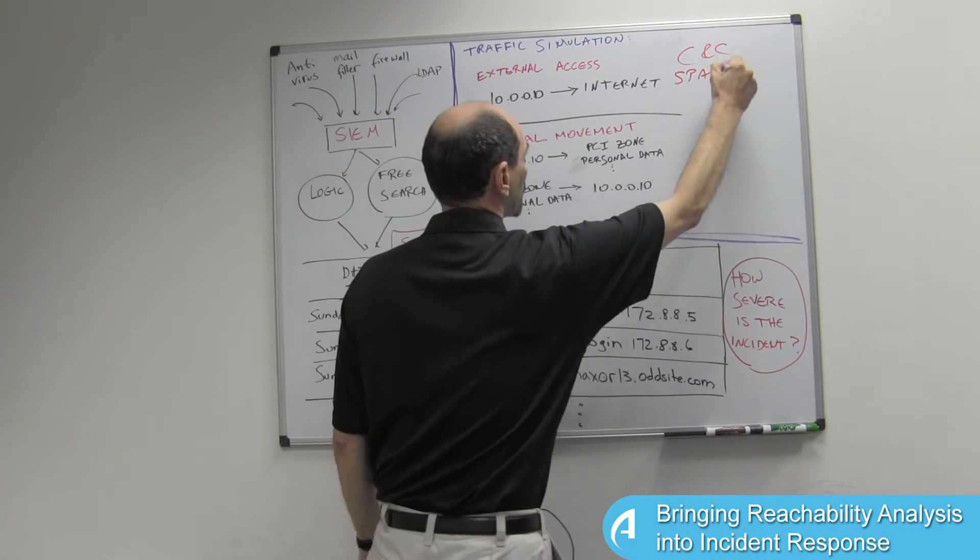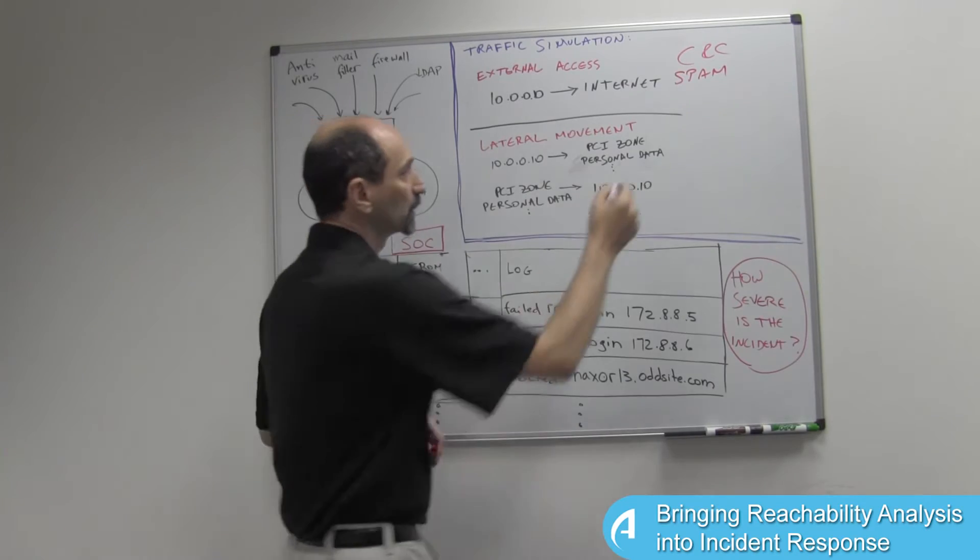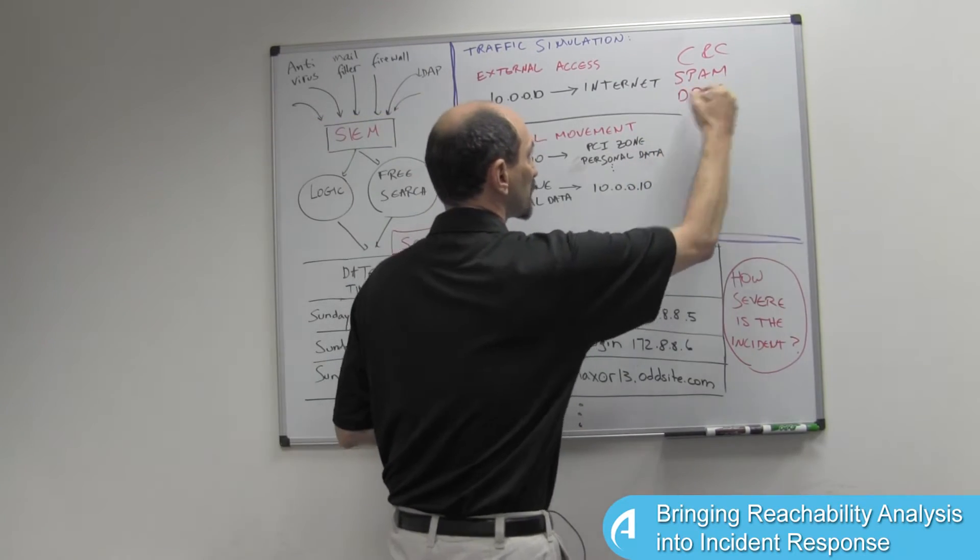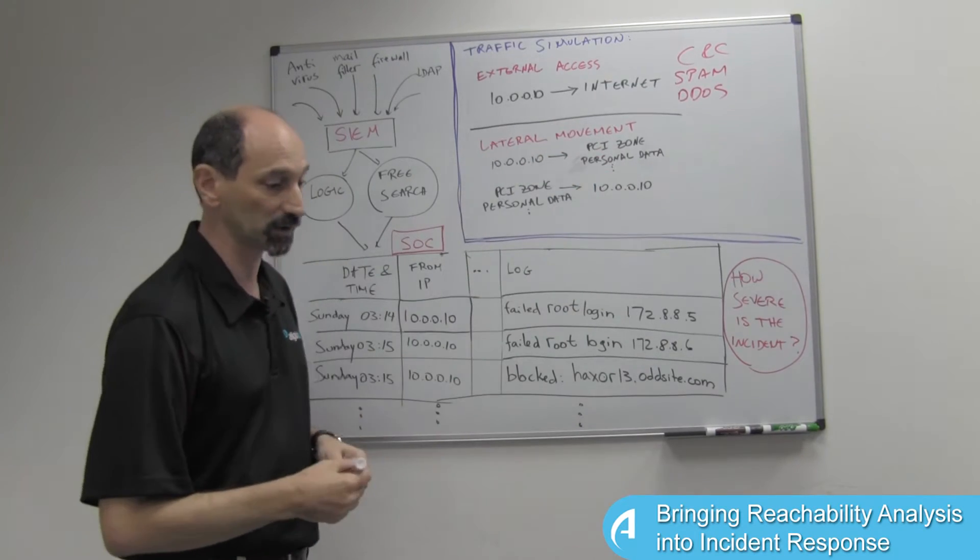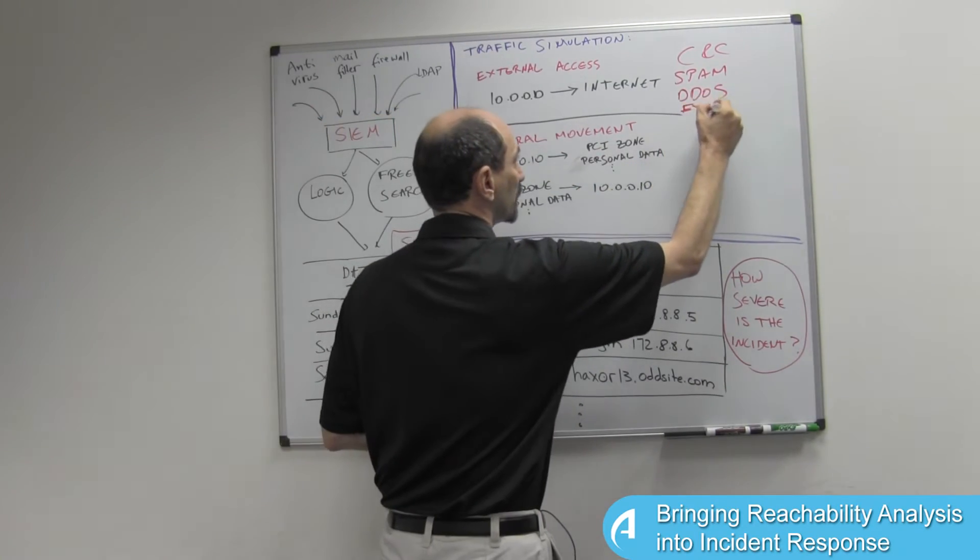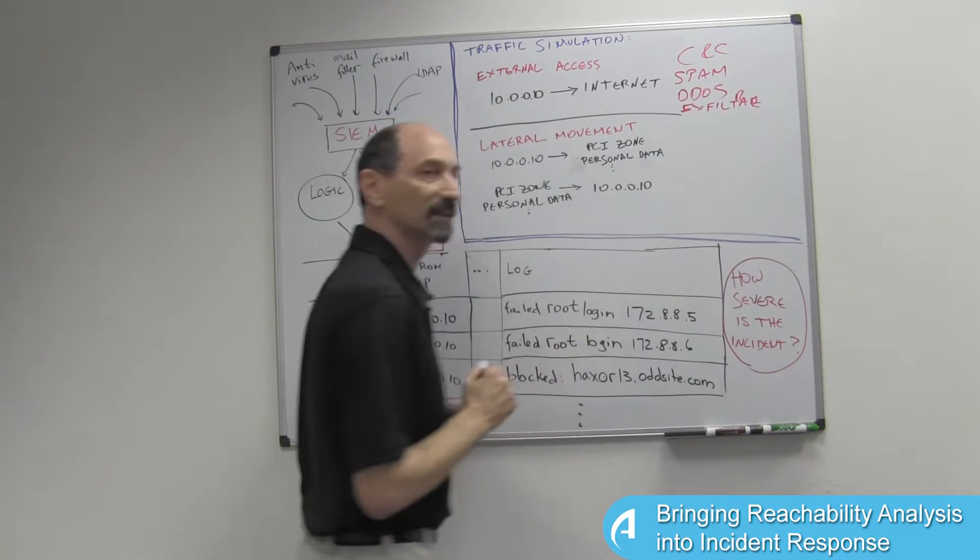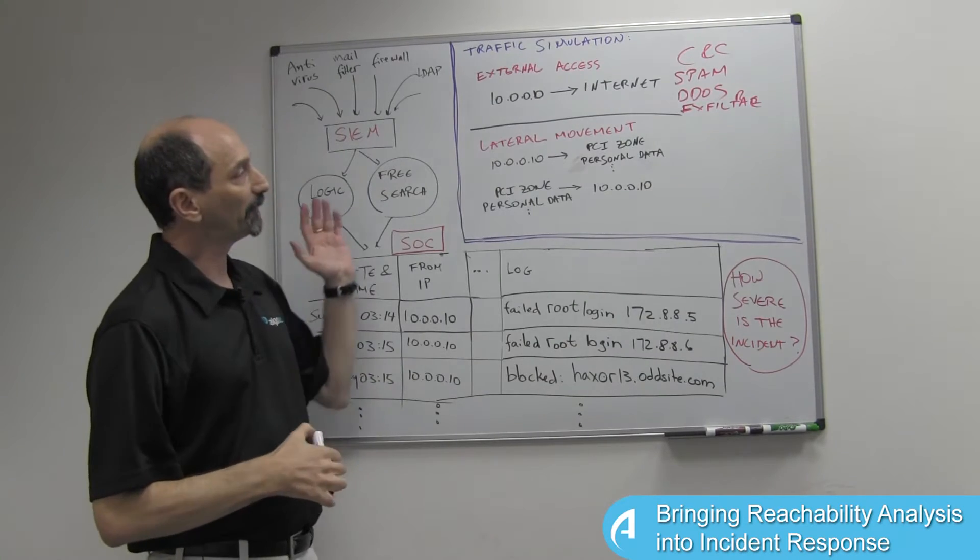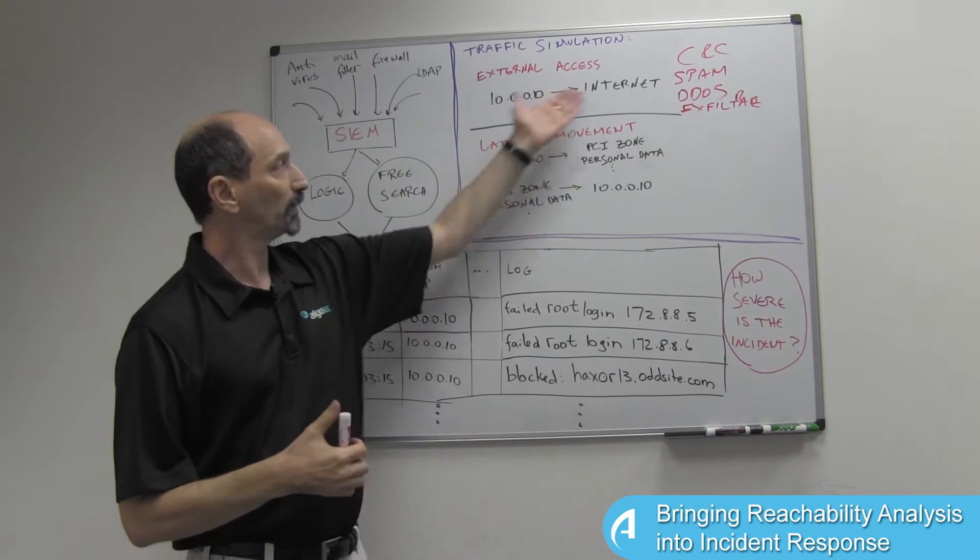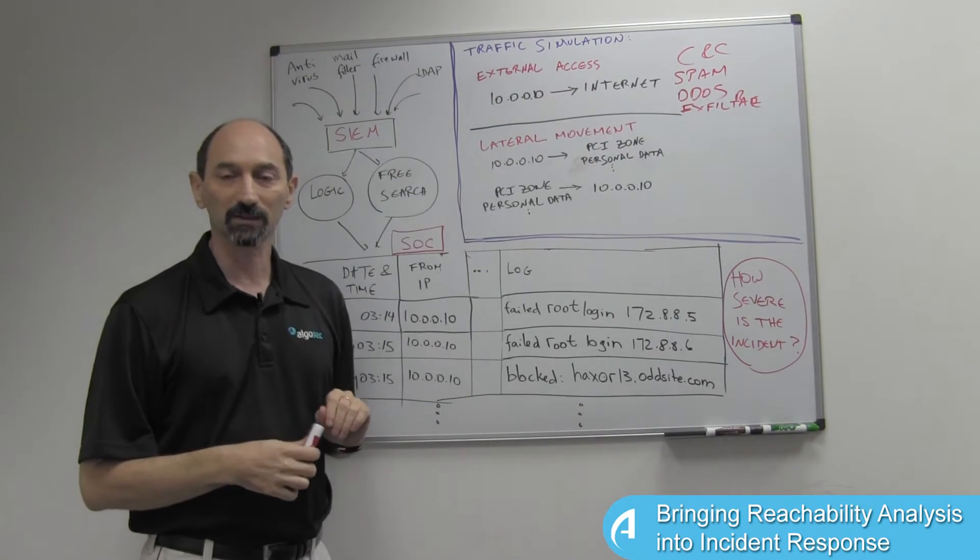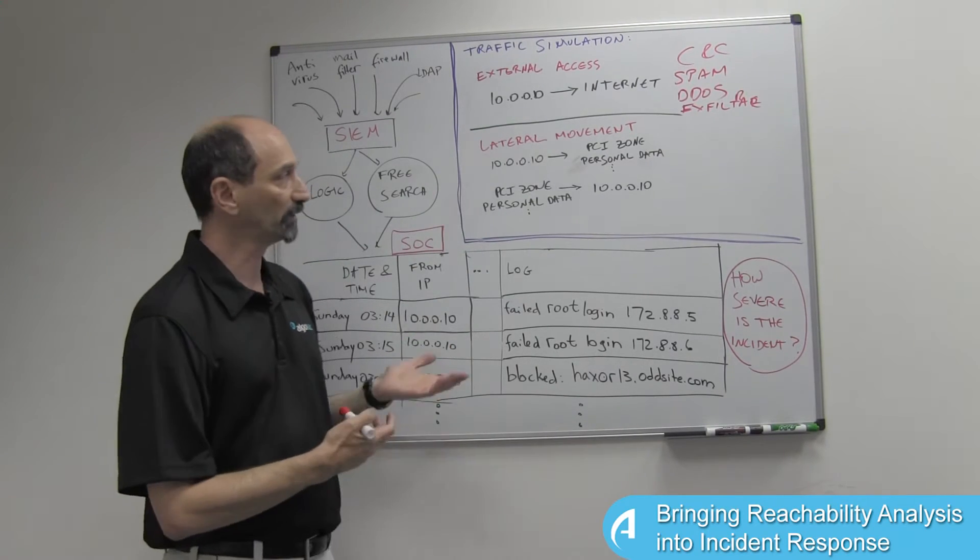It could be used to participate in spam campaigns if it can send out unfiltered email. It could participate in DDoS activities, basically trying to disrupt activity on other systems outside of our organization. It could even be used to exfiltrate data from our organization, stolen information, and send it out towards systems controlled by the attacker. So full outbound access or unlimited outbound access is something that elevates the severity of a threat.